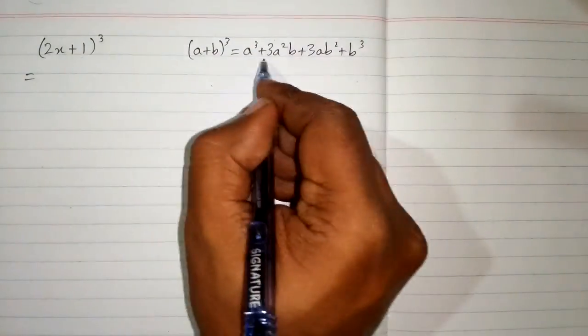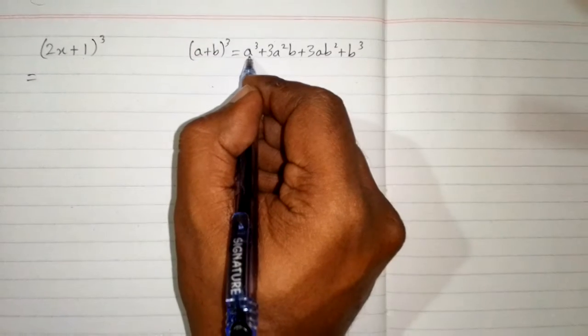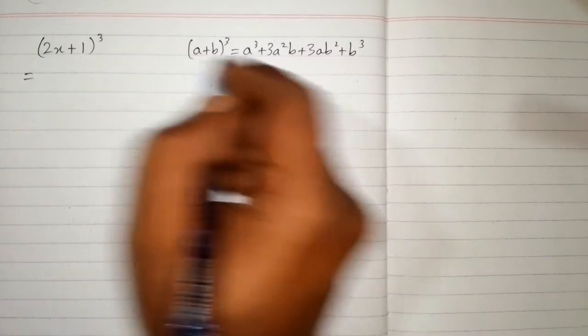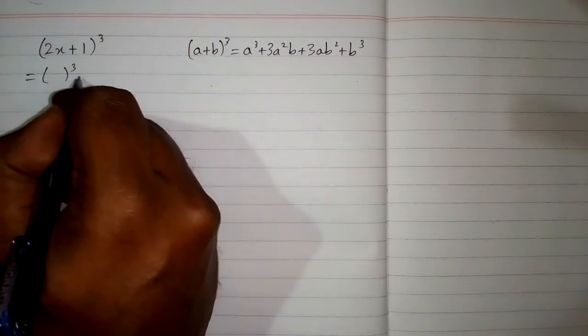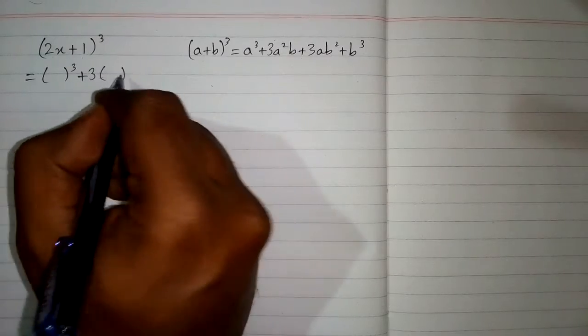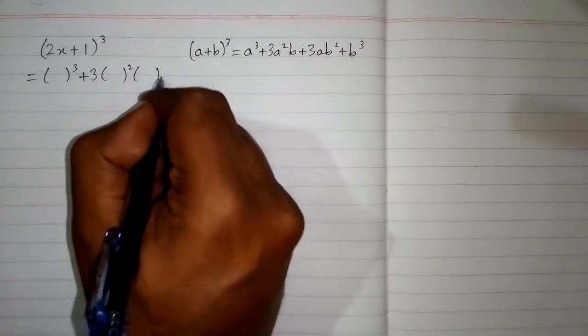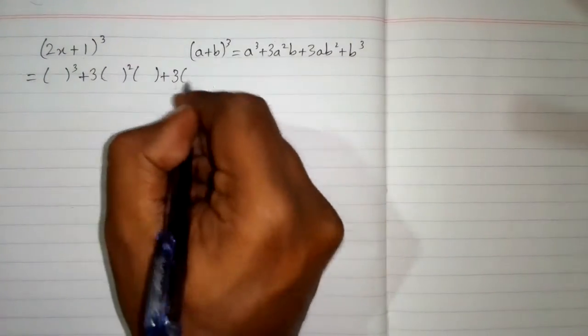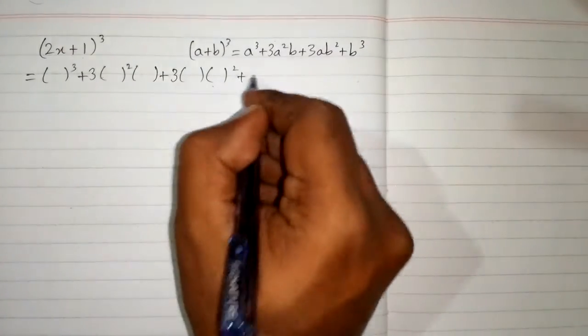First we will draw the structure of this formula. We can put brackets in place of a and b. So this is a cube plus 3a square b plus 3ab square plus b cube.